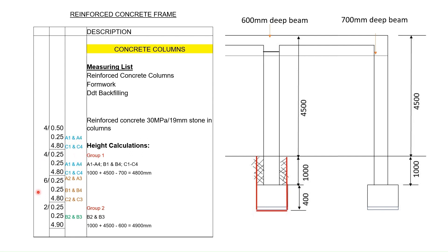Moving on, the square-shaped columns located on the perimeter are measured at 0.25 by 0.25 by 4.8 meters, multiplied by 6. For the internal columns B2 and B3, we measure to the underside of the deepest beam, which is 600 millimeters. Taking 5500 millimeters and deducting 600 millimeters gives a height of 4900 millimeters. In the dimension column we enter 0.25 by 0.25 by 4.9 meters, multiplied by 2 for the two internal columns.